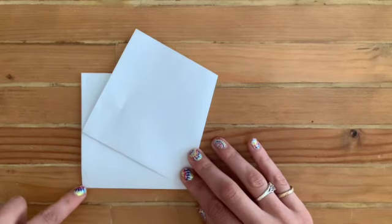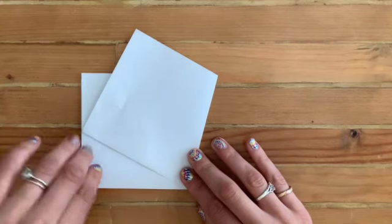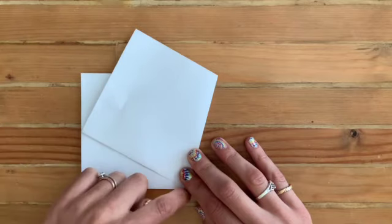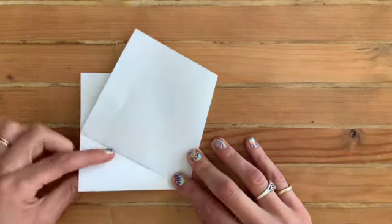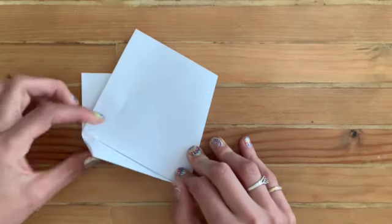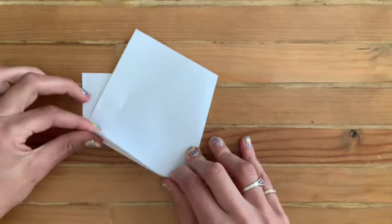Next you will bring this bottom left corner and you are going to crease it right where this new edge is. So I'm going to bring this up and I'm going to crease it right where it comes to this edge.